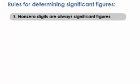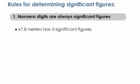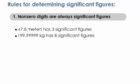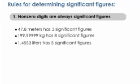To determine the number of significant figures in a measured quantity, there are some rules to follow. Nonzero digits are always significant. So 47.8 meters has three significant figures, 199.9999 kilograms has eight significant figures, and 1.4553 liters has five significant figures.